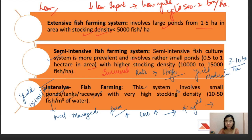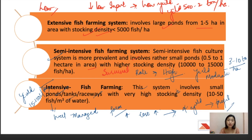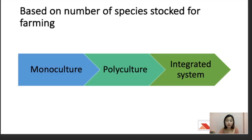Although the initial cost of intensive fish farming is high, the yield is profitably much higher and the income is much higher, covering the initial cost and leading to profit.